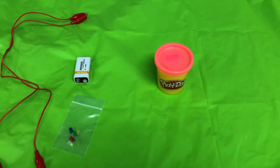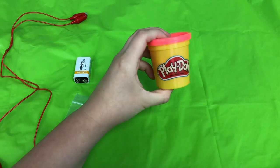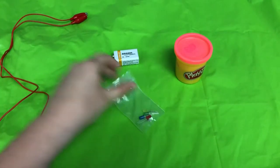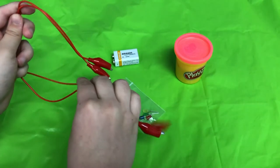Now for our squishy circuits we will need a couple of materials. We will need our Play-Doh, a battery, our LED lights, and our alligator clips.